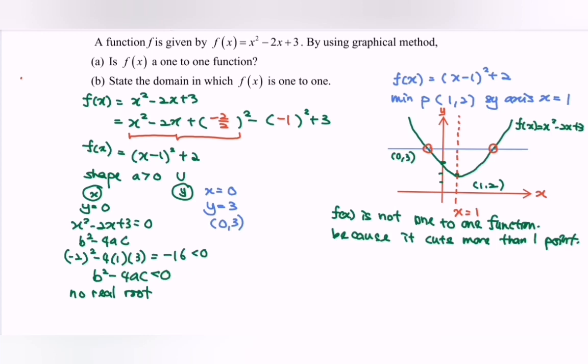Continue. State the domain in which f is one-to-one function. Either we can refer to the function in the standard form, or we can refer to the symmetrical axis or the minimum point in order to decide where is the domain to make the situation one-to-one function. Or we can refer to the graph, which means we can either refer to the left or refer to the right.